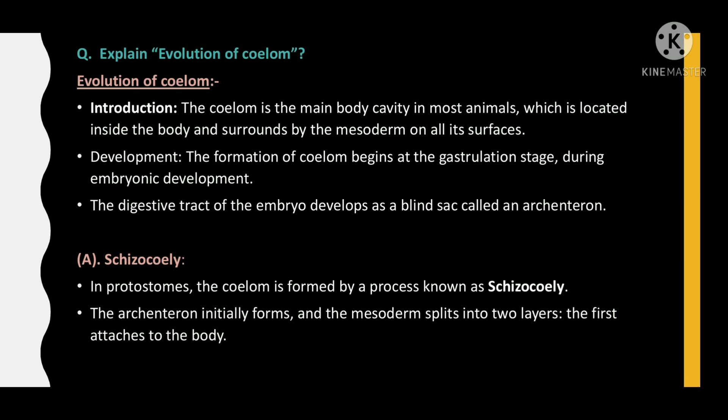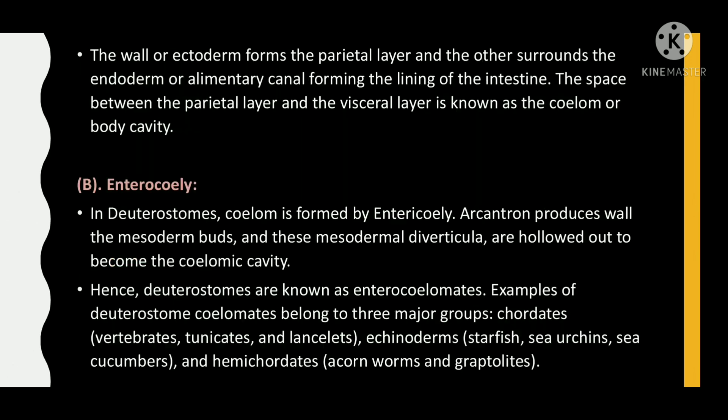The digestive tract of the embryo develops as a blind sac called the archenteron. In protostomes, the coelom is formed by a process known as schizocoely. The archenteron initially forms and the mesoderm splits into two layers — the first attaches to the body wall or ectoderm forming the parietal layer, and the other surrounds the endoderm forming the lining of the intestine. The space between the parietal layer and visceral layer is known as the coelom or body cavity.